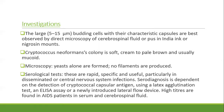Investigations: large 5 to 15 micrometer budding cells with characteristic capsule are best observed by direct microscopy of CSF or pus in Indian ink or nigrosin mounts. The colony is soft, creamy to pale brown, and usually mucoid; on microscopy, yeast alone are formed and no filaments are produced. Serological tests are rapid, specific, and useful particularly in disseminated or CNS infection; serodiagnosis is dependent on detection of cryptococcal capsular antigen using latex agglutination test, ELISA, or newly introduced lateral flow device. High titers are found in AIDS patients in serum and CSF.